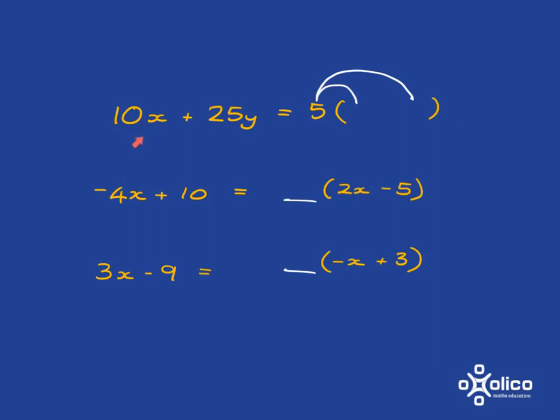We can think of it either saying 5 times what gives me 10x, and hopefully that's easy, 5 times 2x gives you 10x. Or otherwise, because you know multiplication and division are related to each other, you could just say 10x divided by 5 which is 2x, and so you get your answer here of 2x.